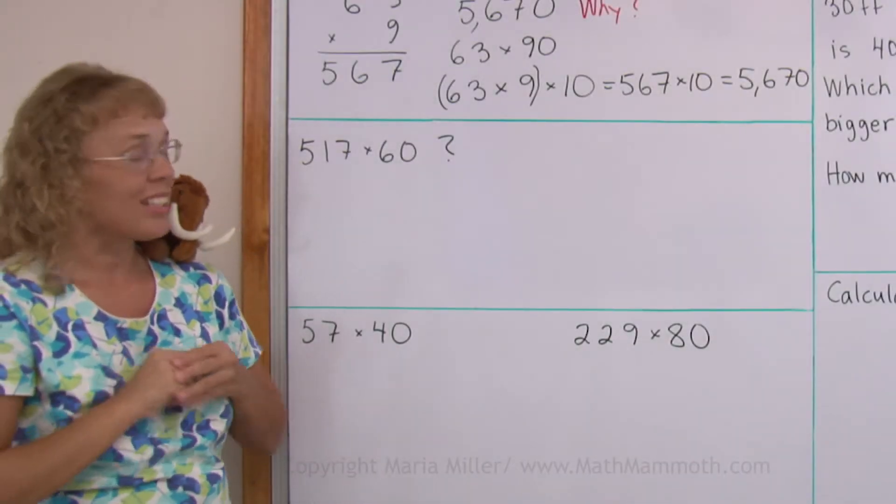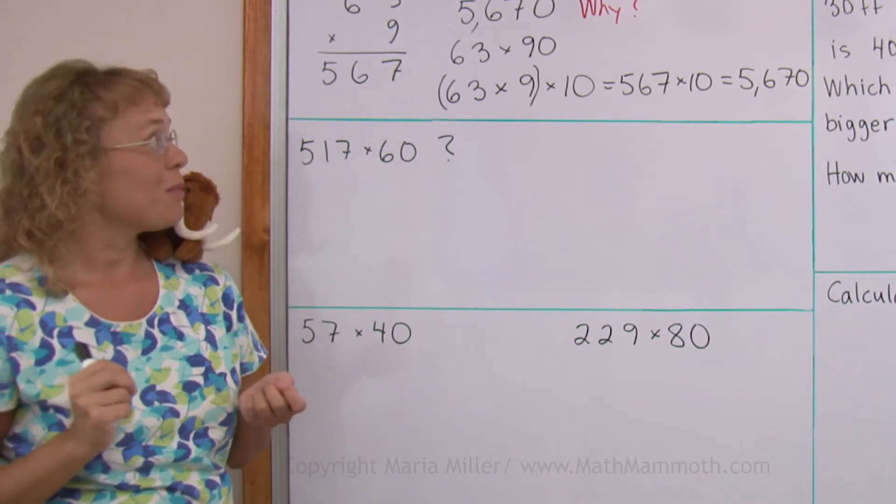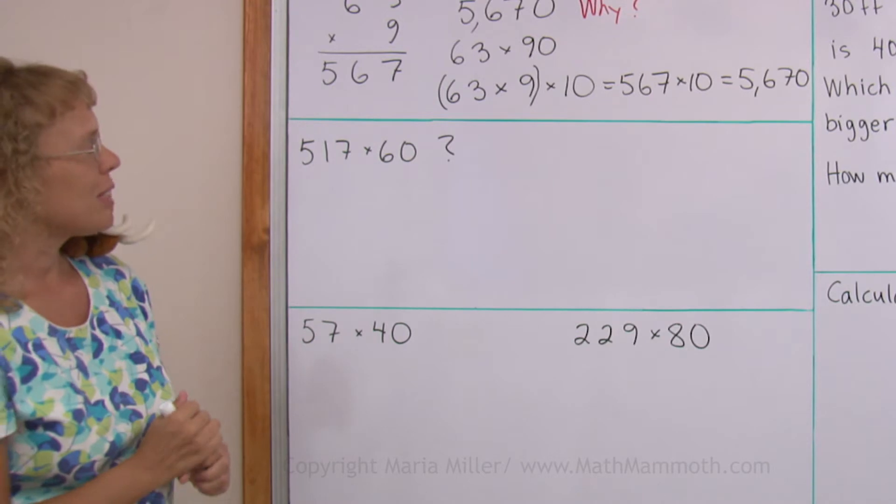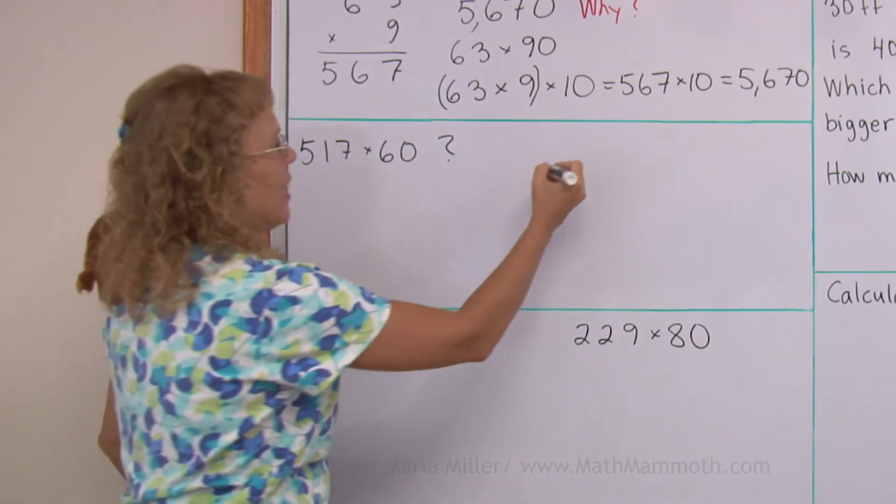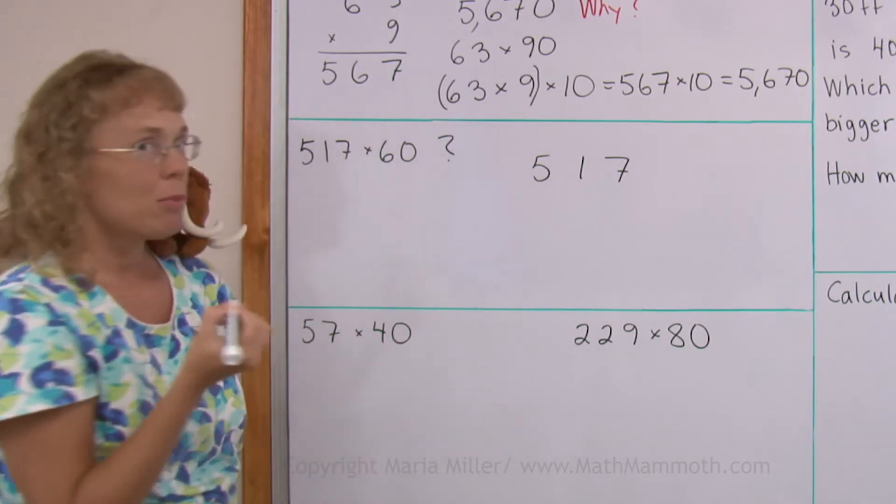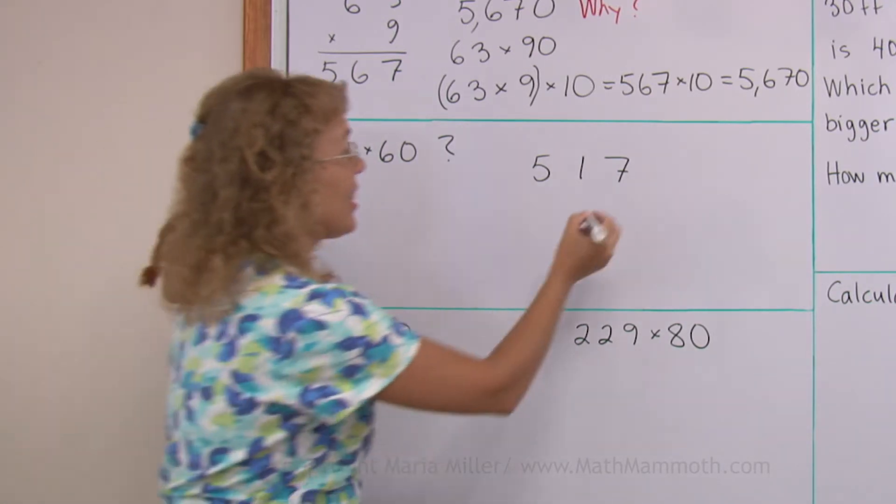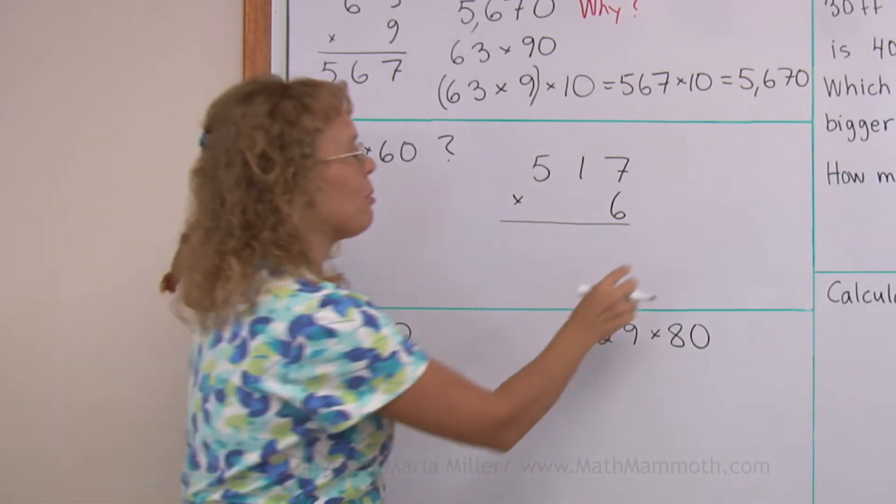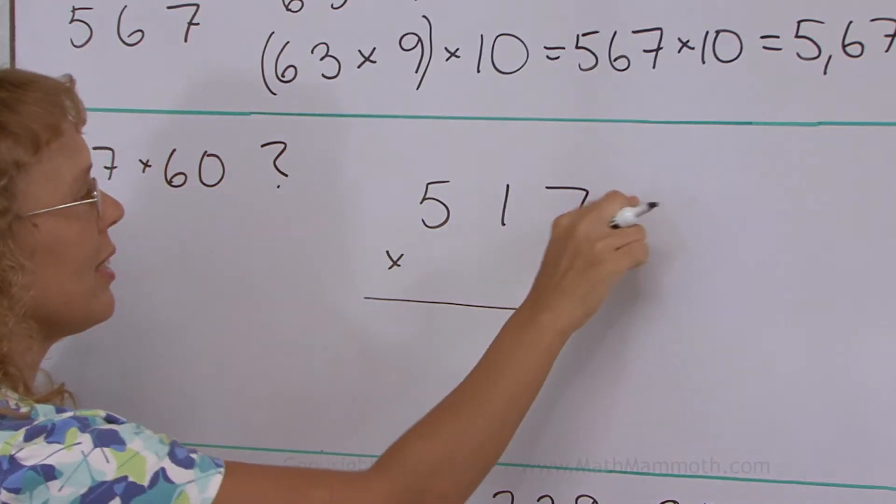Let's use this little idea, little trick if you want to, with this problem. 517 times 60. 517 times, but I'm going to only multiply it times 6 because that's easier. And then in the end, I'm going to put a zero there.